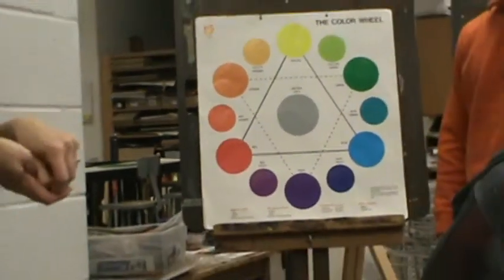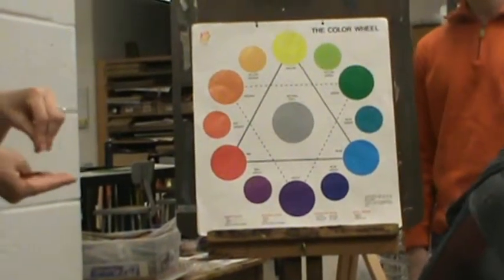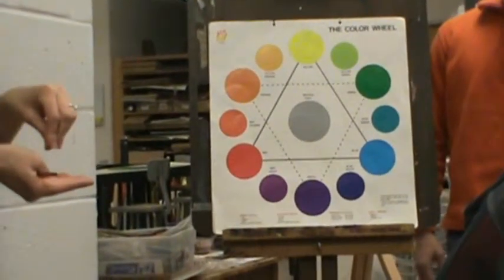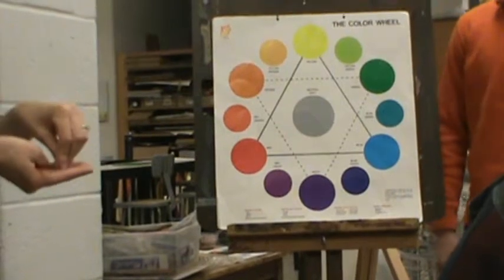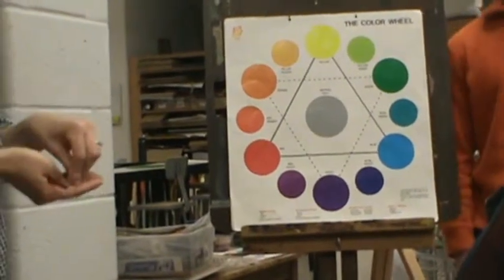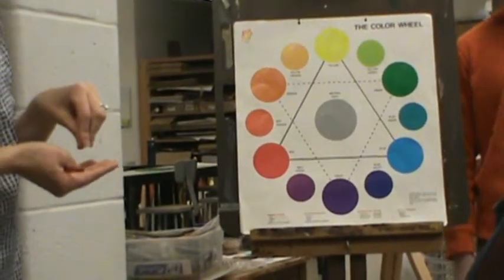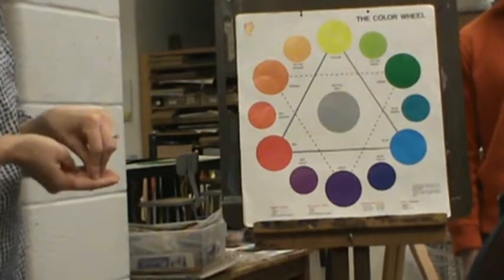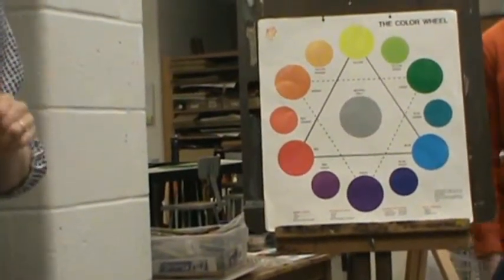For instance, if we have something that's kind of like yellow-orange and it has a little black in it, then we can mix an analogous color of red-orange with a little black in it, or yellow-green with a little black in it, as an example.